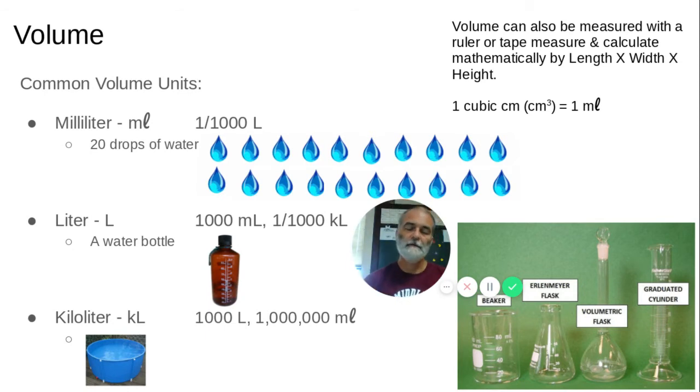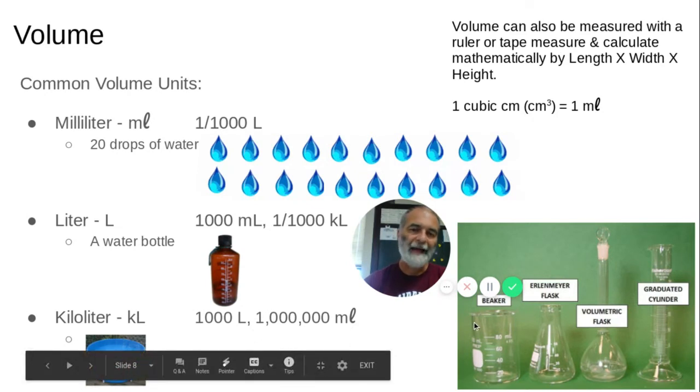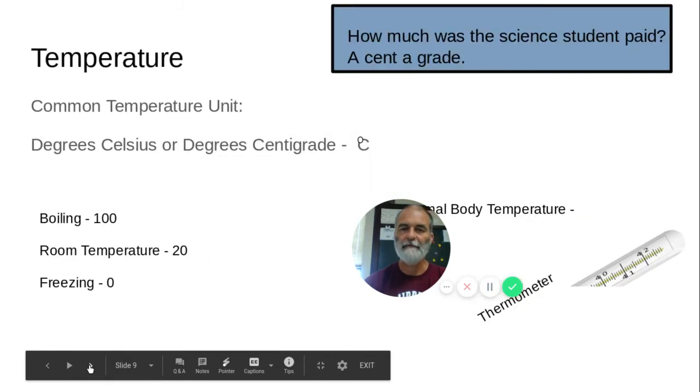The other way you can measure volume is with length times width times height. That's the mathematical measurement. That gives you something called a cubic centimeter. And just so you know, as you can see right here, one cubic centimeter is the same thing as one milliliter. So mass, volume, and length are the three main measurements that we have in the metric system.